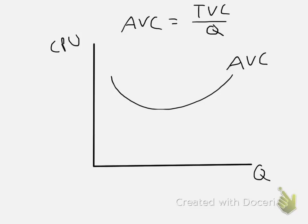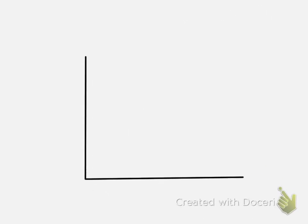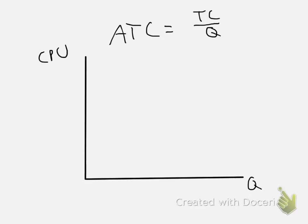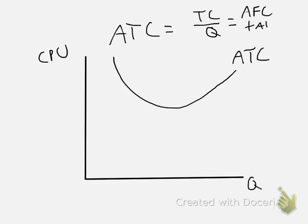Next up, we have average total cost. Average total cost equals total cost divided by quantity. The axes are labeled the same: quantity on the x-axis, cost per unit on the y-axis. Average total cost also has a U shape — it goes down and then starts to come back up. We can also calculate average total cost as average fixed cost plus average variable cost.